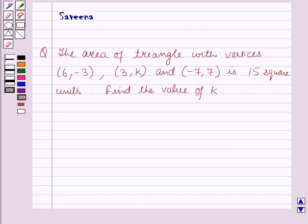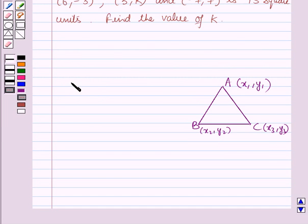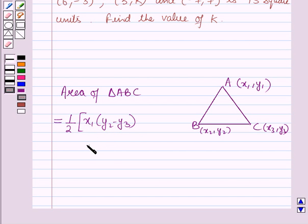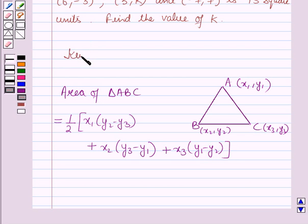Before starting the solution of this question we should know our result. In a triangle ABC with A(x₁,y₁), B(x₂,y₂) and C(x₃,y₃), the area of the triangle ABC is given by the formula which is ½ times x₁ into (y₂-y₃) plus x₂ into (y₃-y₁) plus x₃ into (y₁-y₂). Now this result will work out as a key idea for solving out this question.